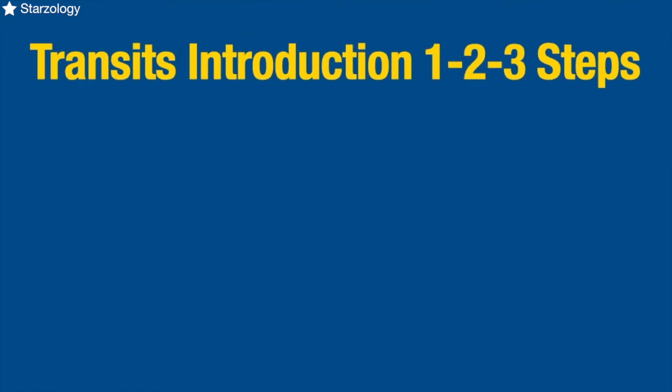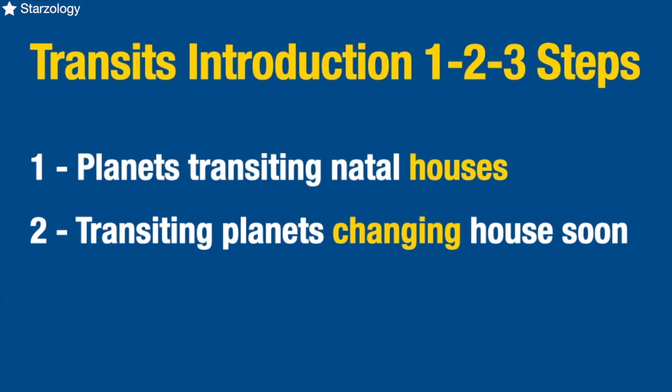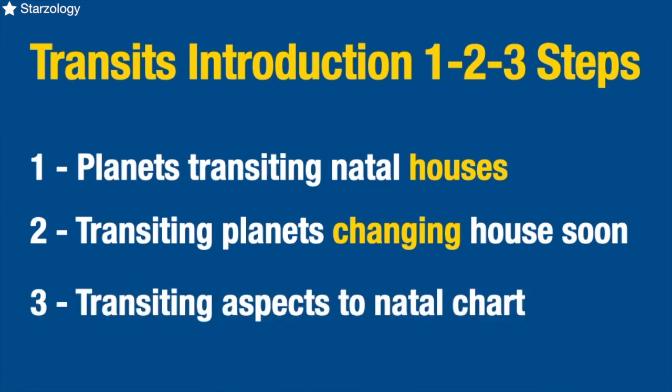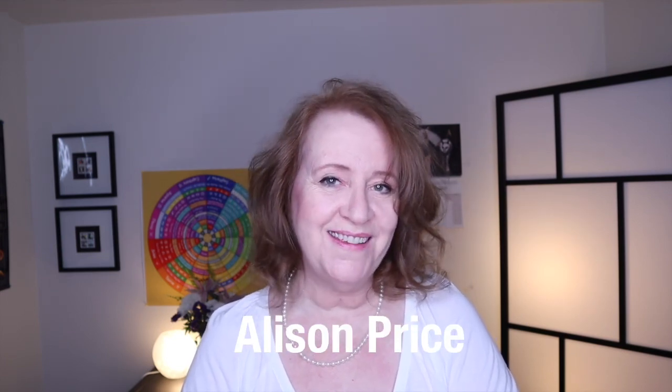So your transit introduction one, two, three steps are: step one, find planets transiting natal houses; step two, find transiting planets changing house soon; and step three, find transiting aspects to the natal chart. These are the main things you're looking for in transit work. Now you have the three steps required to extract transit information so you can gather your thoughts before you start doing interpretations. I'd like to know from you: what is your most important Ptolemaic transit aspect happening in the near future? I'm Alison Price — thank you so much for watching. I'll see you next time.